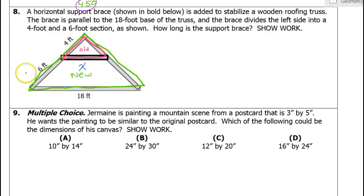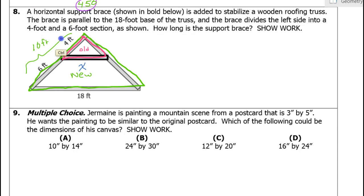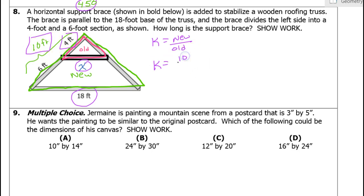I need to find the full length of this side of the large triangle, so I combine the 4 and 6: 6 plus 4 is 10. Now I've got corresponding sides: the left side of the small triangle is 4 feet, and the left side of the large triangle is 10 feet. Also, x and 18 are corresponding sides. For the scale factor, we always do new length divided by old length — so that's 10 over 4, which reduces to 5 over 2.